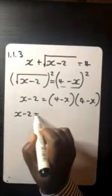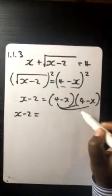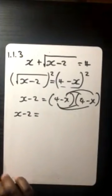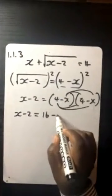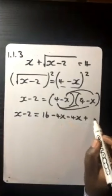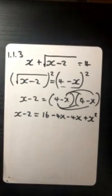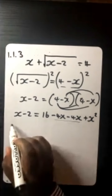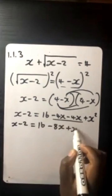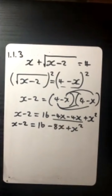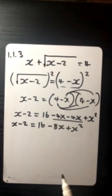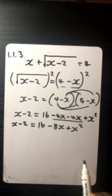When you square both sides, the square root is removed and you remain with x minus 2 on the left. On the right you expand (4 minus x) squared: 4 times 4 is 16, 4 times negative x is negative 4x, negative x times 4 is negative 4x, and negative x times negative x gives positive x squared. Combining like terms: x minus 2 equals x squared minus 8x plus 16.